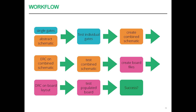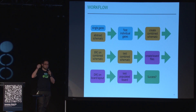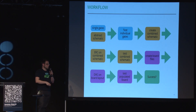So this is a lot of scripts and a lot of stuff. Here's what my workflow looks like: I have single gates and a schematic where I use these abstract gates. I test the individual gates and combine them, then run an ERC — electrical rule check — and then run tests against that: does 1 plus 1 make 2? Does comparing 1 to 1 return equals? Then I create board files, and then there's a normal PCB development process.